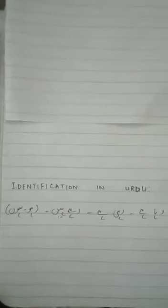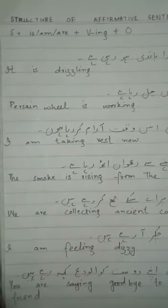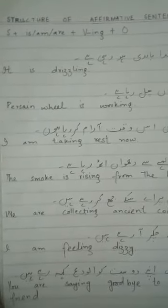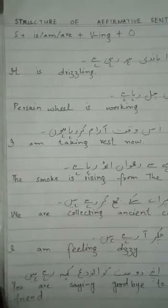اب ہم structure کی طرف چلتے ہیں۔ Affirmative Present Continuous sentence کا structure ہے: Subject + helping verb + present participle + object. Helping verbs میں ہمارے پاس is، am، are ہیں۔ Is کا helping verb third person singular pronoun — he، she، it — کے لیے use کریں گے۔